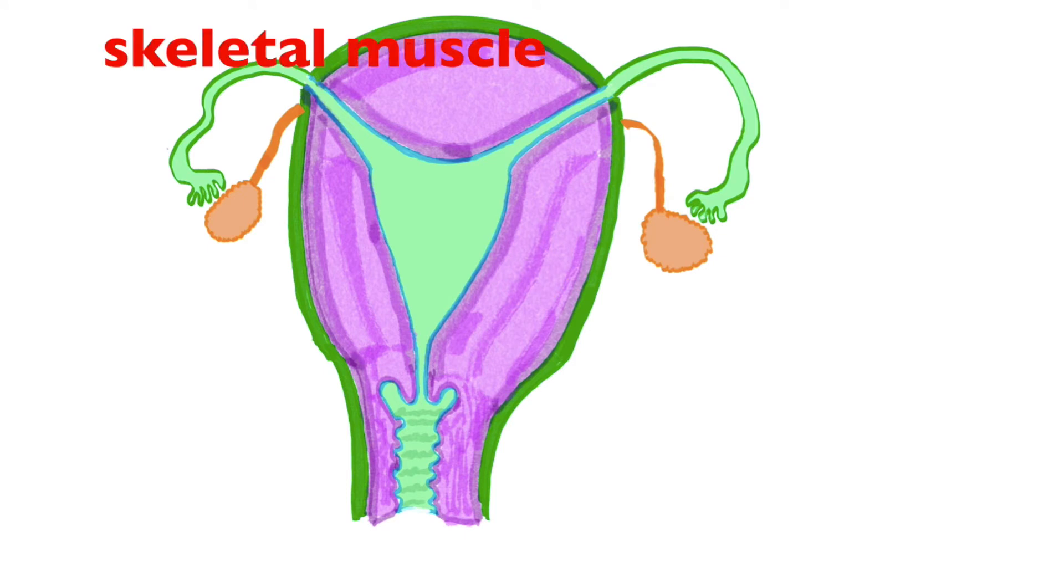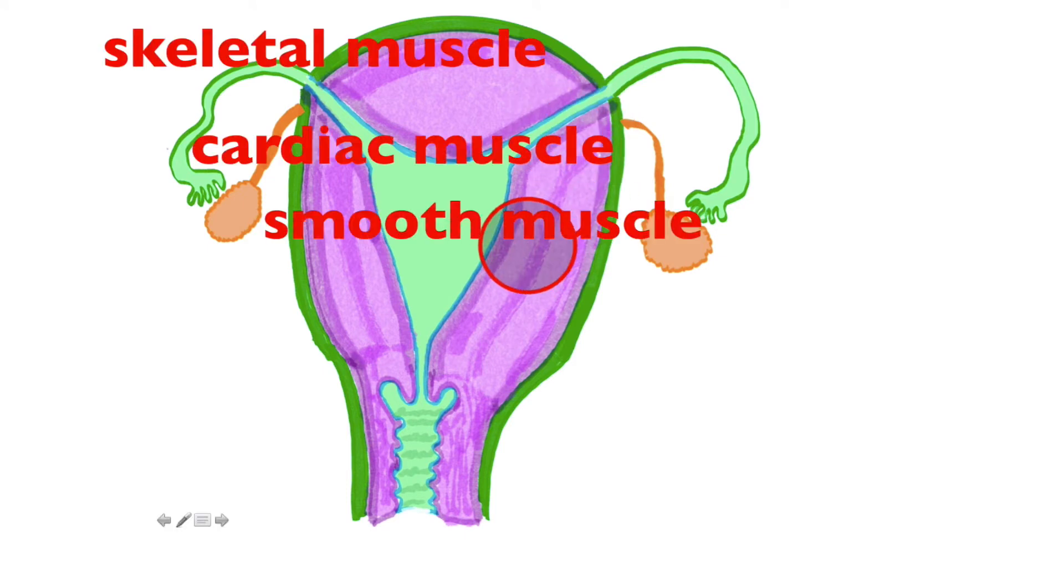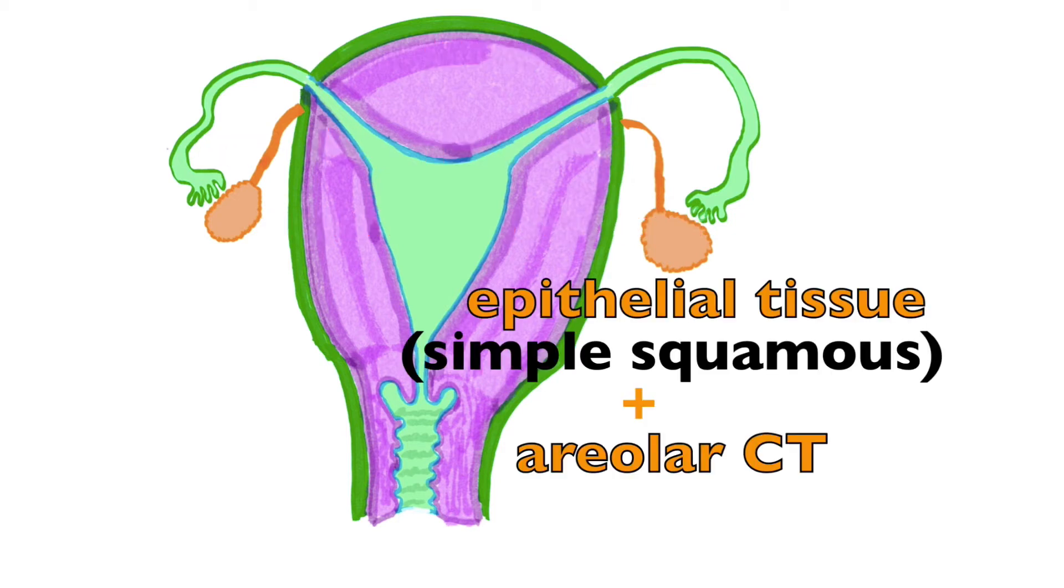The type of tissue that makes up the parametrium is epithelial tissue, specifically simple squamous epithelial tissue and an underlying areolar connective tissue. And lining the endometrium, or I should say making up the endometrium, is simple columnar epithelial tissue.